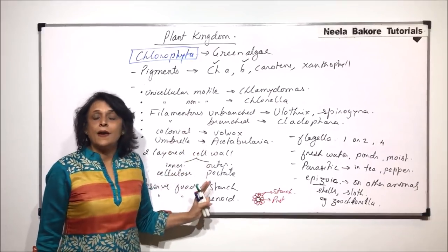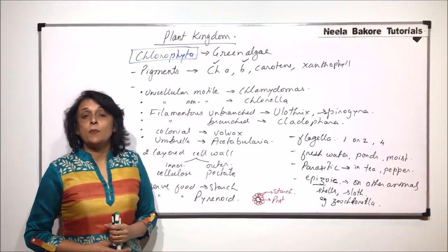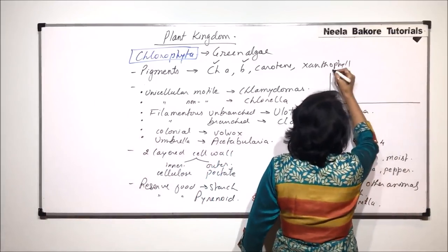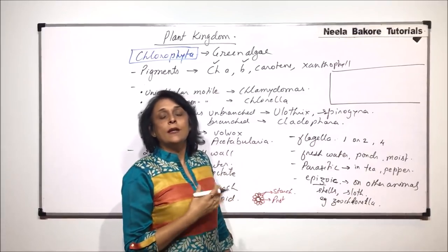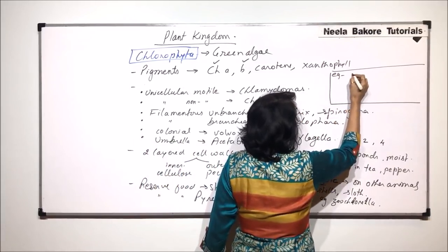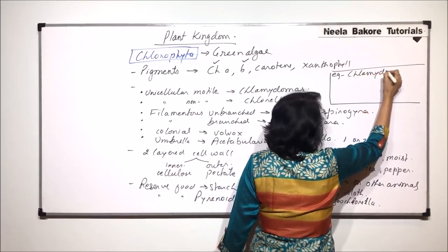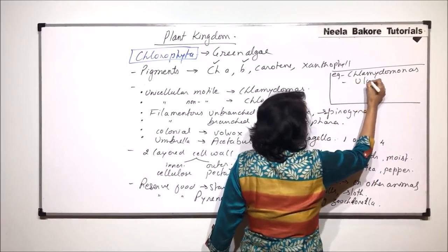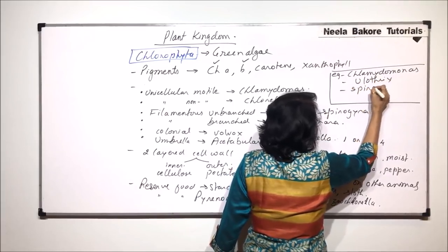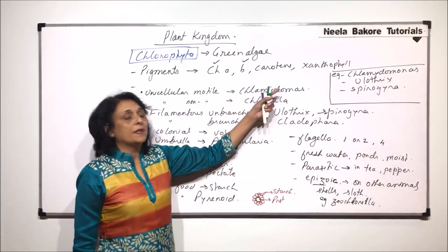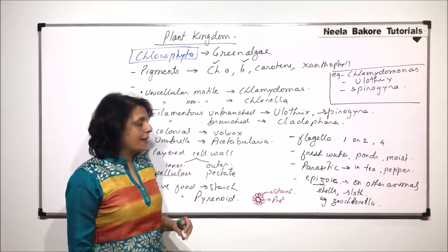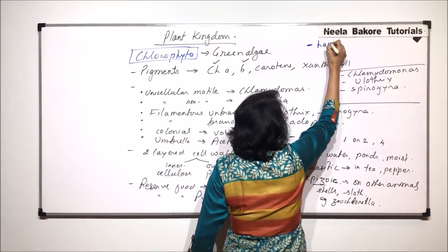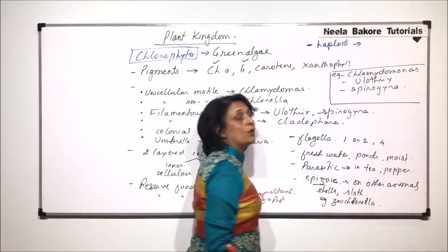Under green algae, we will be talking about three main examples and will study their life cycles. The examples are Chlamydomonas, which is unicellular and motile; Ulothrix; and Spirogyra. These green algae are normally haploid and show a haplontic life cycle — meaning most of the stages are in the form of haploid cells.